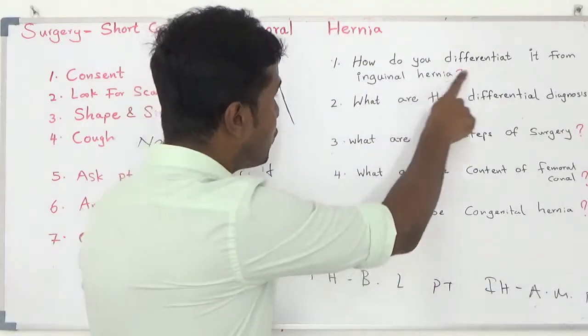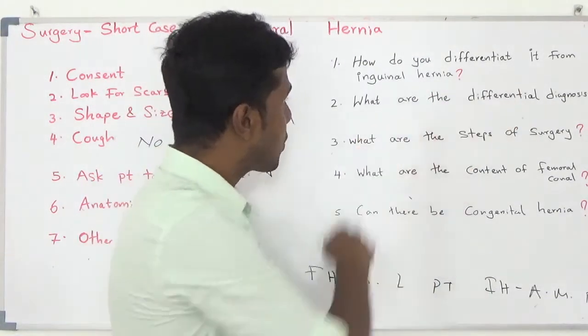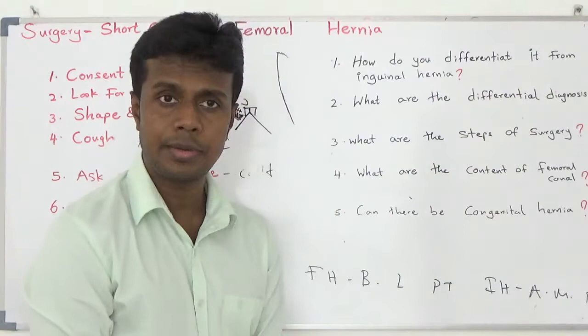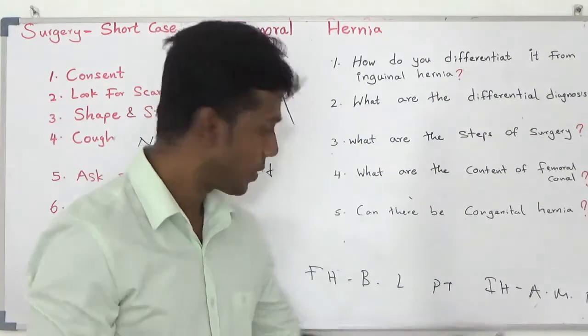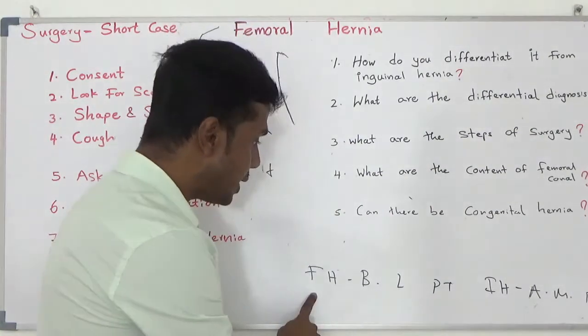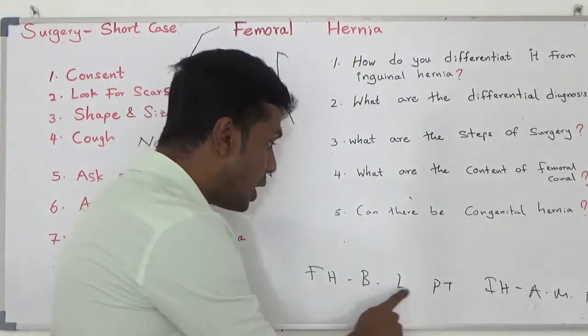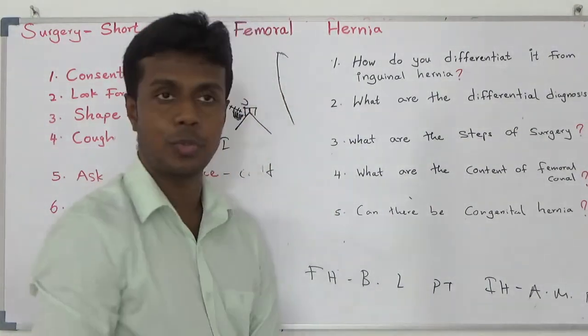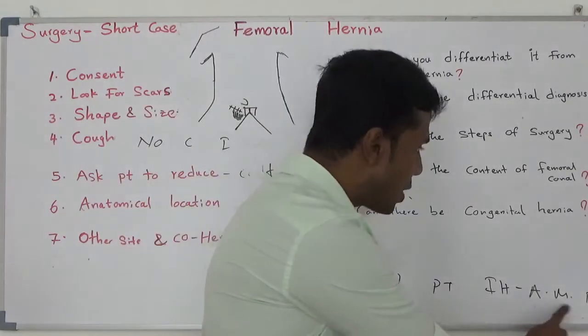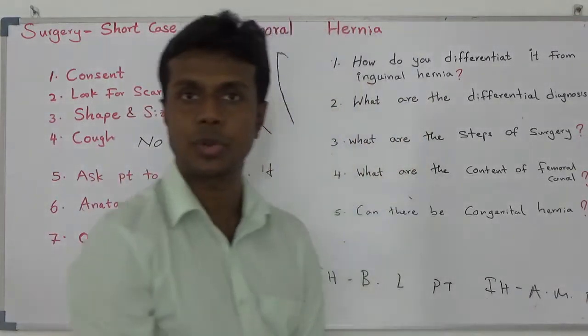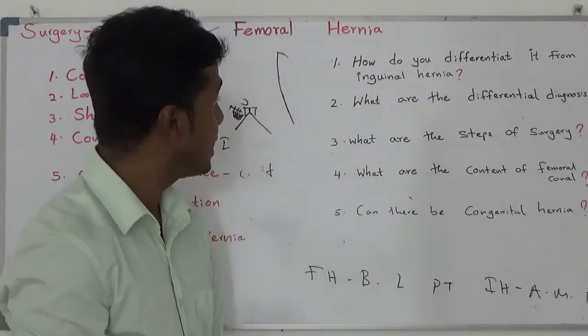How do you differentiate it from inguinal hernia? Your femoral hernia lies below and lateral to the pubic tubercle. Your inguinal hernia lies above and medial to the pubic tubercle. That is how you differentiate.